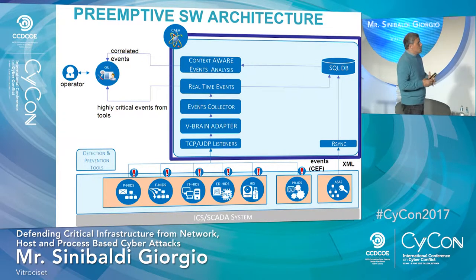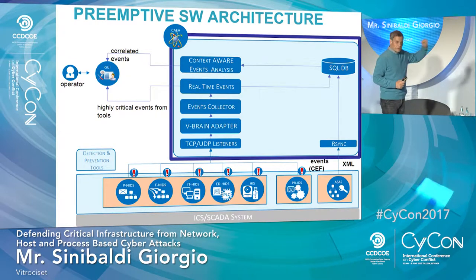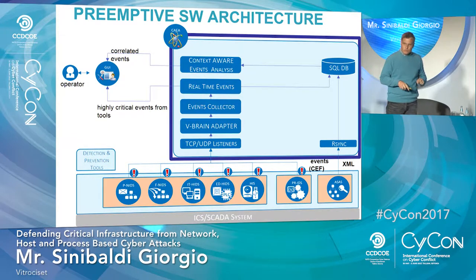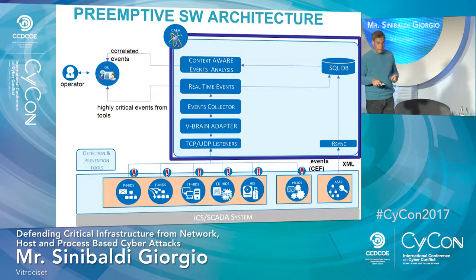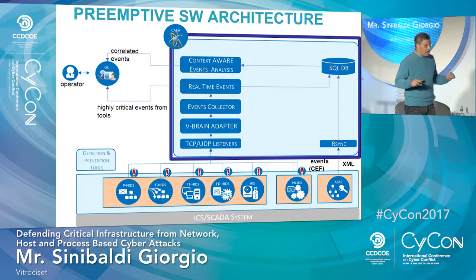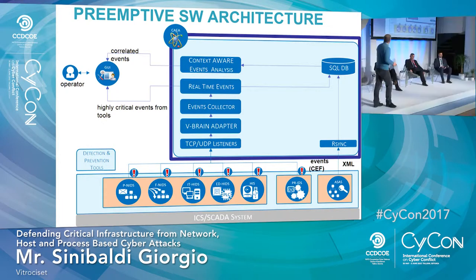What happens in the CAIA — the correlation engine — is that you have the possibility to find threats which are not discovered singularly by each tool. This is the real difference between PRIMITIVE and other tools we can find on the market, even though this is a research project.